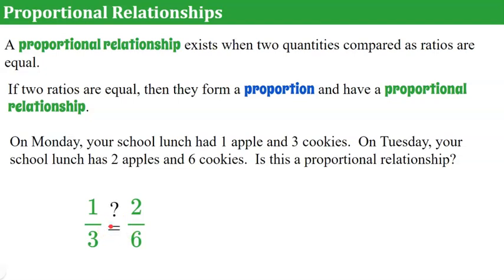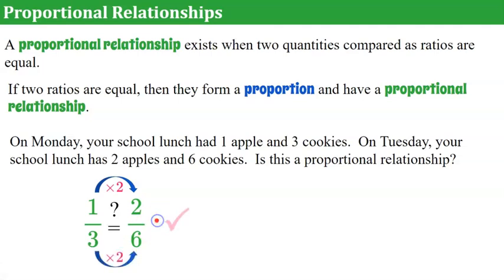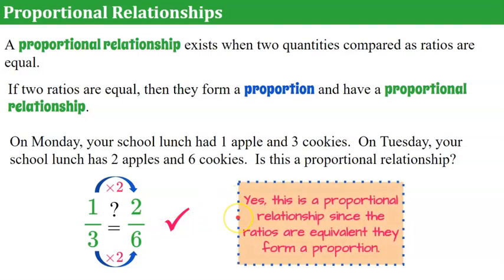So we look to see if they're equal. Since we know that 1 times 2 is 2, and 3 times 2 is 6, then we know that it checks — they are proportional. So yes, this is a proportional relationship, since the ratios are equivalent and they form a proportion. The other way you could check is to simply simplify one of the ratios.